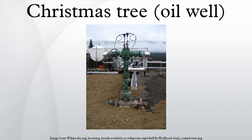Subsea trees contain many additional valves and accessories compared to surface trees. Typically a subsea tree would have a choke, a flowline connection interface, subsea control interface, and sensors for gathering data such as pressure, temperature, sound flow, erosion, multi-phase flow, and single-phase flow such as water or gas.